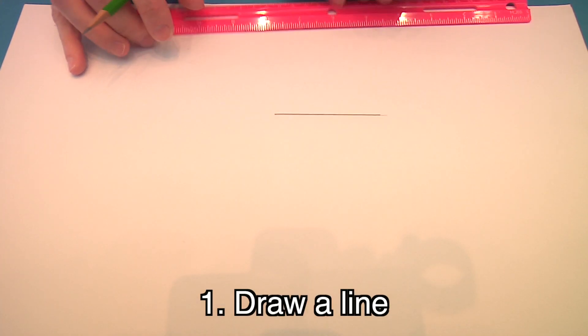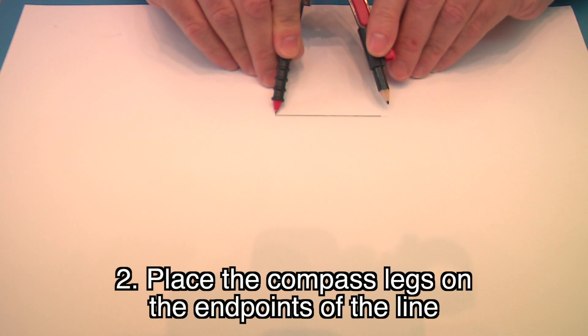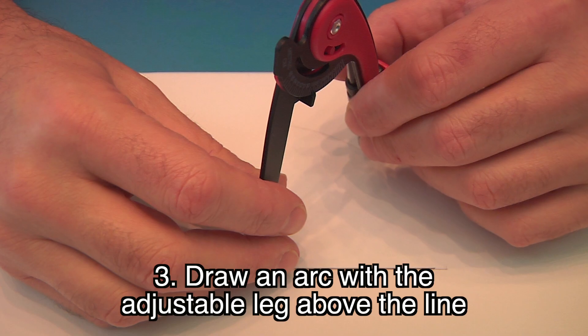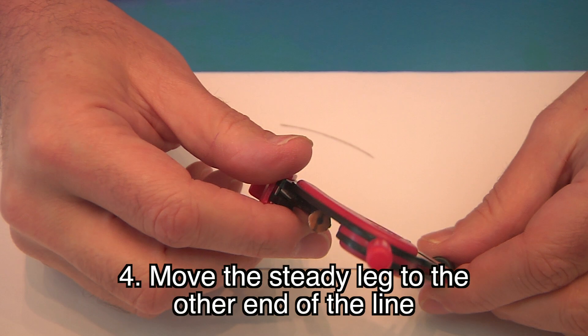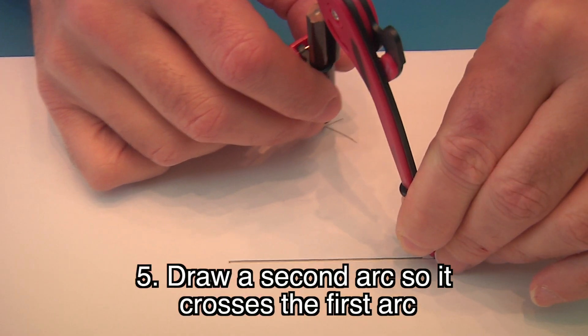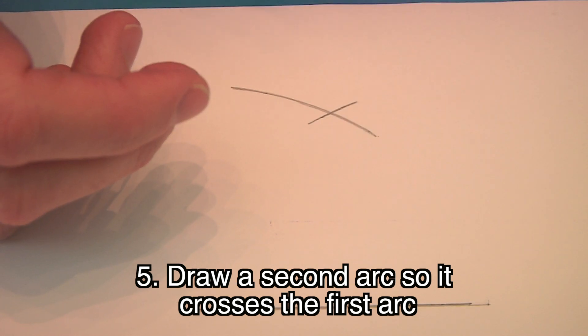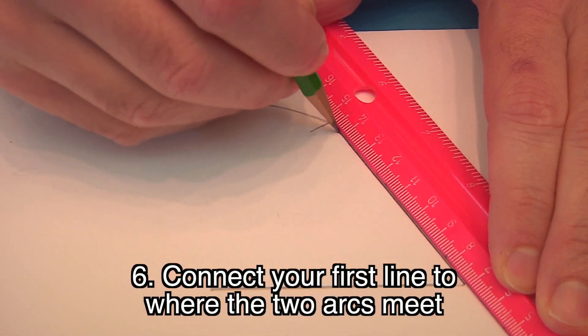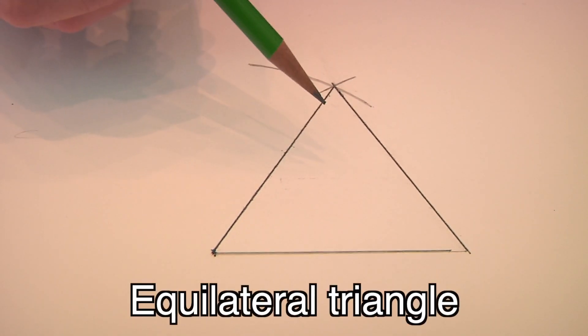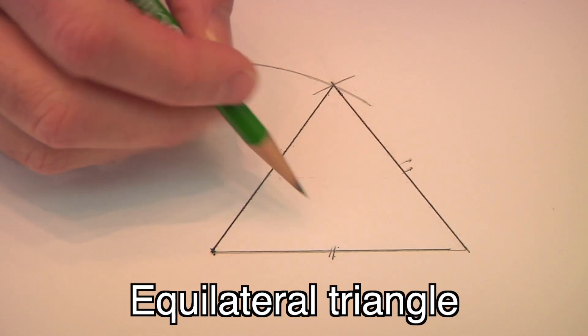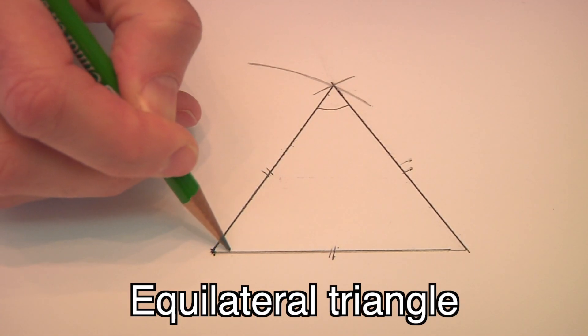Let's start with something basic. An equilateral triangle. That's a triangle with three equal sides and three equal angles. First, draw a line. The length really doesn't matter. Next, place the compass endpoints down on either end of your line. Draw an arc with the adjustable leg above the line. Move the steady leg to the other end of the line and draw a second arc so it crosses the first. Draw a line to connect your first line and repeat on the other side. So there it is. A triangle with three equal sides and three equal angles.